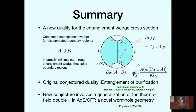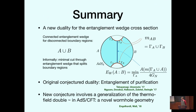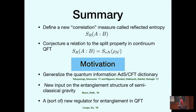The original conjecture duality, when this was introduced, was to a boundary theory quantity called the entanglement of purification, which is some sort of correlation measure between A and B. The new conjecture I'm going to introduce involves various things: a generalization of the thermofield double state in ADS-CFT, so I'll introduce a novel wormhole geometry.